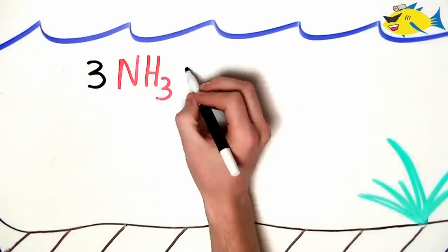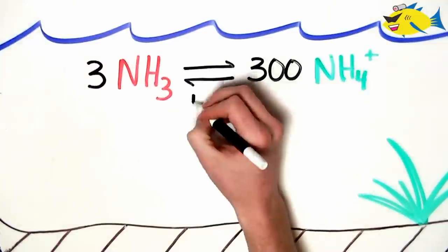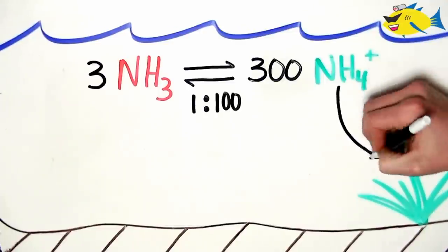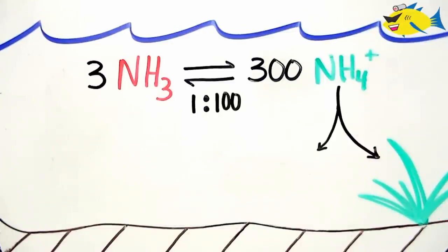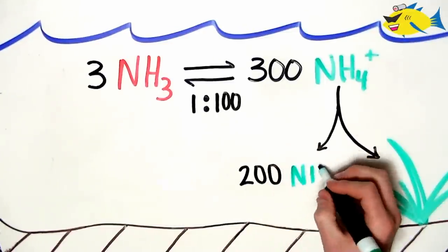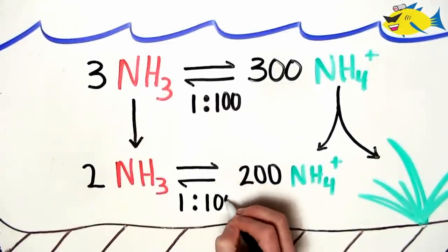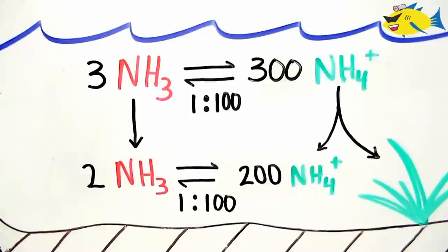For example, say we have three molecules of ammonia and 300 molecules of ammonium, fulfilling our 1 to 100 ratio at a constant pH of 7.2. If our plants consume 101 molecules of this available ammonium, this will in turn force one molecule of ammonia to protonate forming ammonium, thus restoring the ratio of 1 to 100. This is just one of the several biological processes which work in our favor to detoxify this compound.